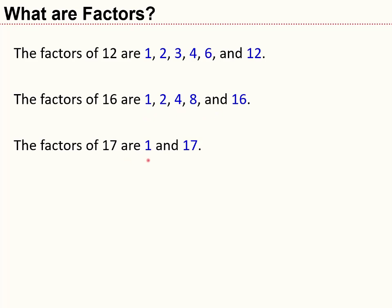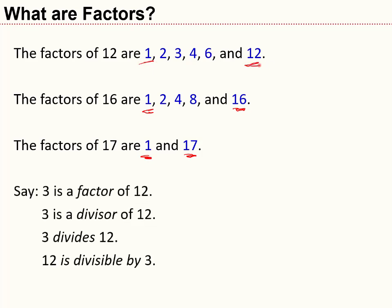Now 17 doesn't have very many factors — the only factors are 1 and 17. Something to note is that for every number, 1 and the number itself are always going to be factors. We have a few different ways of talking about factors: we might say that 3 is a factor of 12, or 3 is a divisor of 12, or 3 divides 12, or 12 is divisible by 3. All of those mean the same thing.